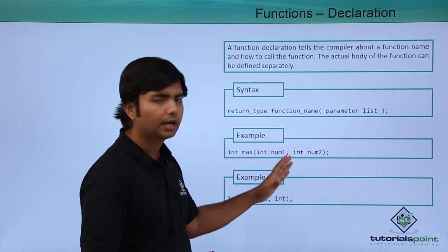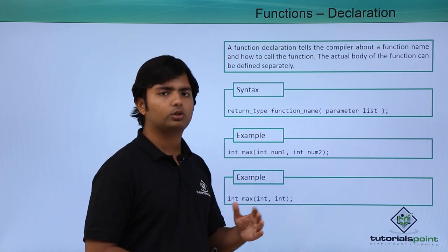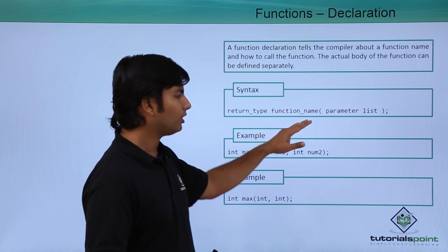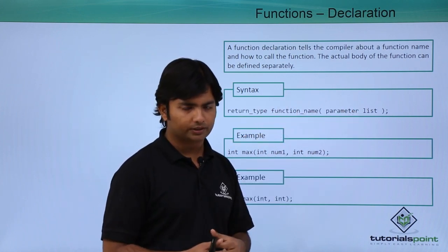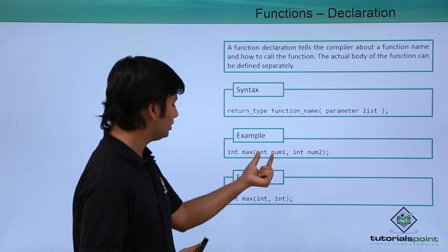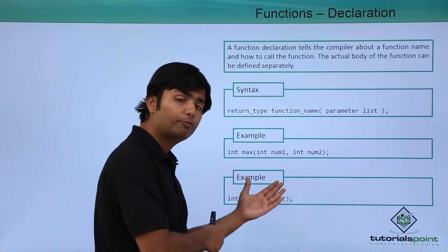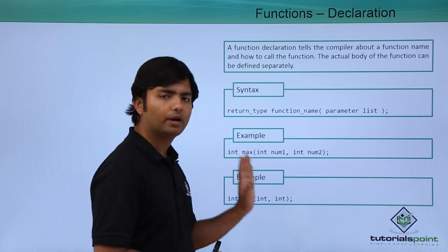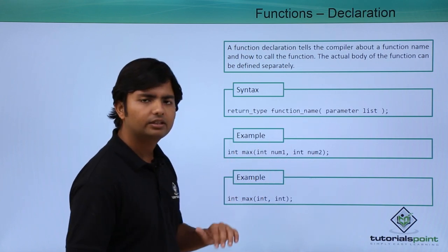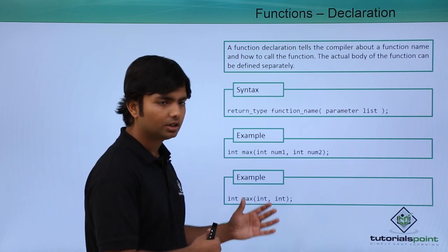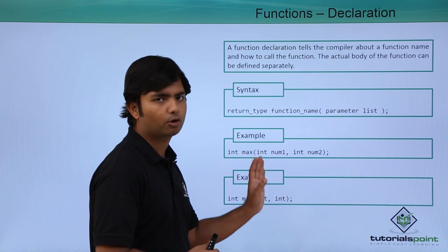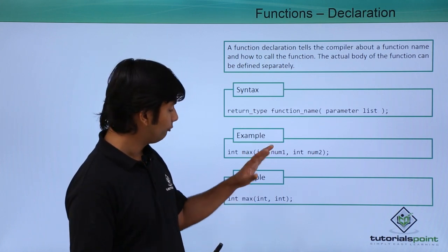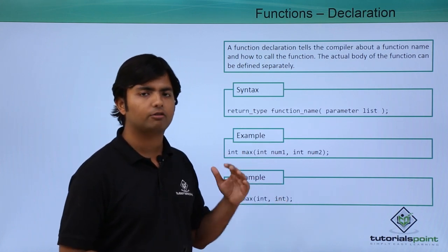Before defining the actual function, if you want, you can give a prototype. In a prototype you don't need to give the definition — you specify the return type, the function name, and the list of parameters. You can optionally include or skip the parameter names in the prototype, but when defining the function it is mandatory to include the parameter names.